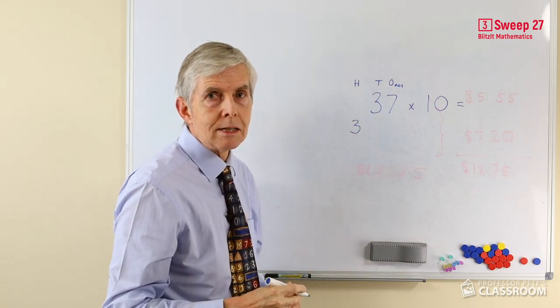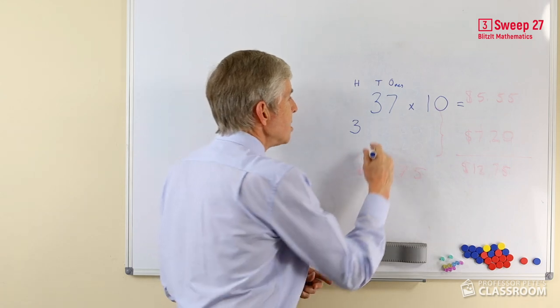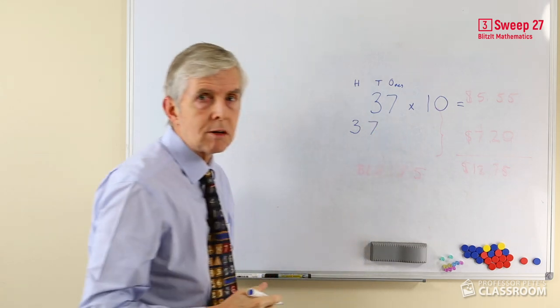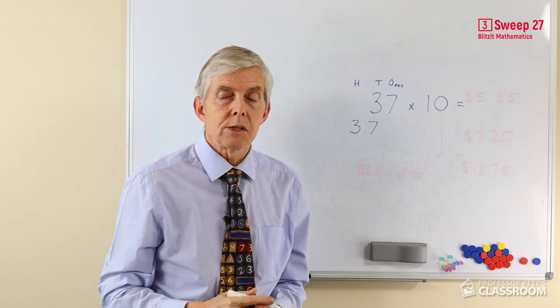And the 7 ones: 7 × 10 is 70, or 7 tens. Now let's talk about the zero. It's not simply a matter of writing a zero. Why do we have a zero?